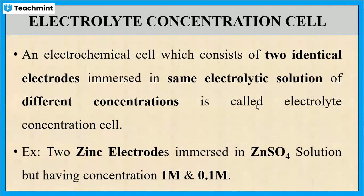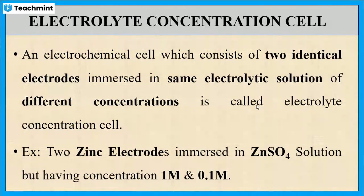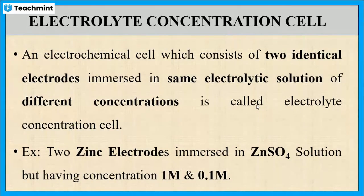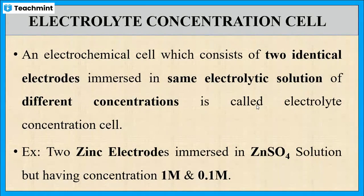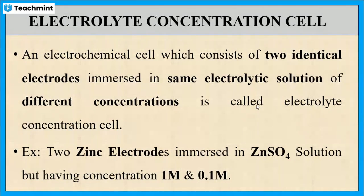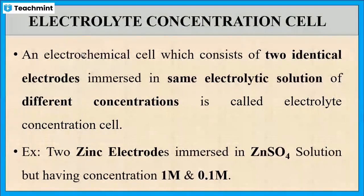If one of the beakers contains a one molar zinc sulfate solution, then the other beaker contains other than one molar zinc sulfate solution — it may be 0.1 molar or 0.01 molar and so on. The electrolyte concentration cell consists of two identical electrodes immersed in the same electrolytic solution of different concentration.